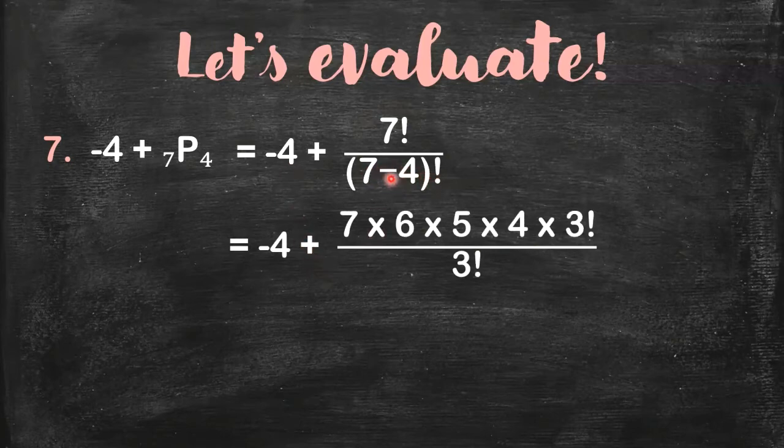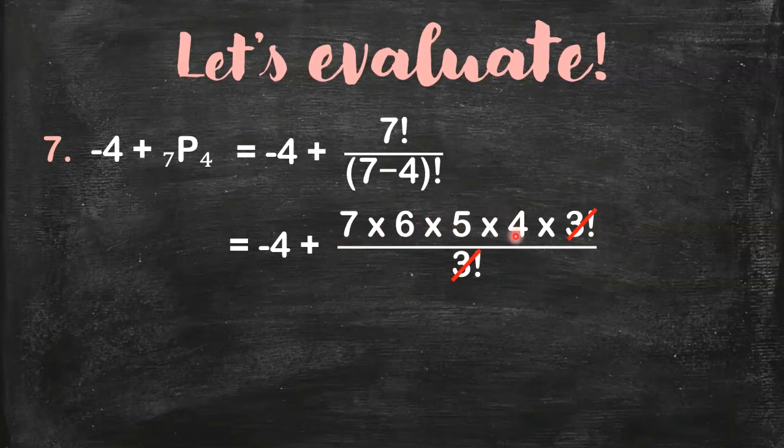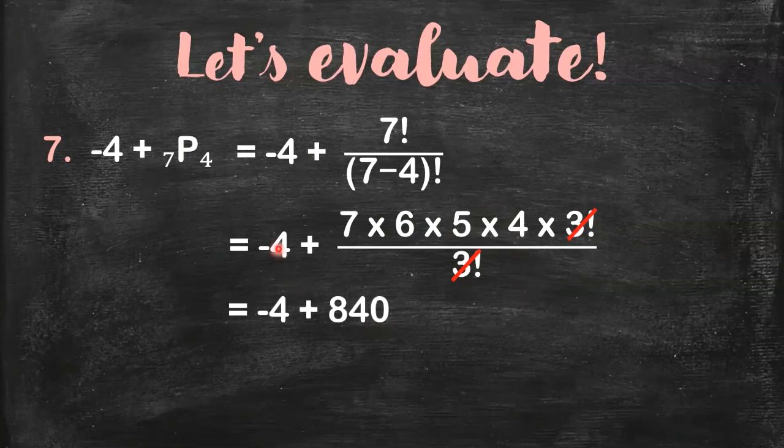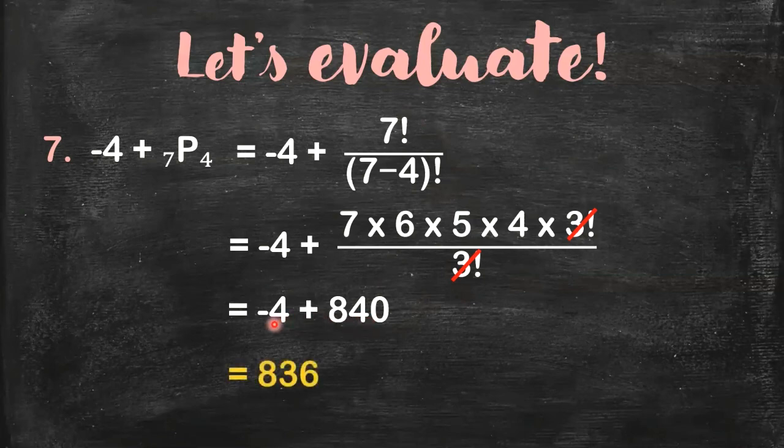7 minus 4 - it's 3. So you have 3 factorial. Don't expand. The 7 factorial will stop at 3 factorial. Don't write 3, 2, 1 because this will cancel out with the denominator. So all you have to do is to get the answer in 7×6×5×4. You'll get this. I'm just copying the negative 4 while simplifying 7P4. I started by writing its factorial expression, and then I evaluated it. Then I get its numerical value. And then, what is 840 plus negative 4? So it's like 840 minus 4. You will get 836.